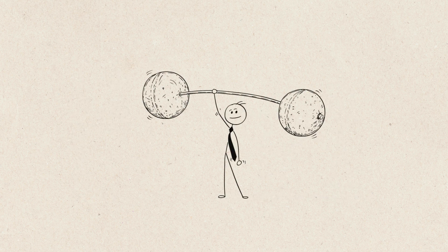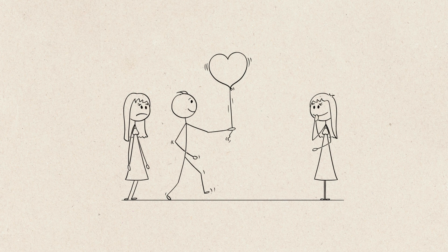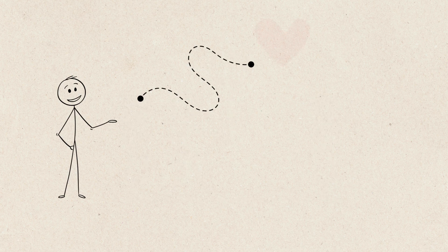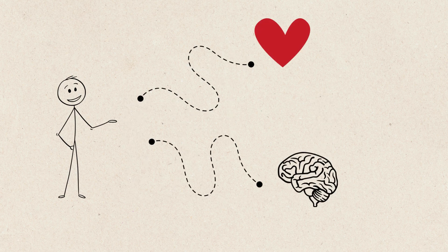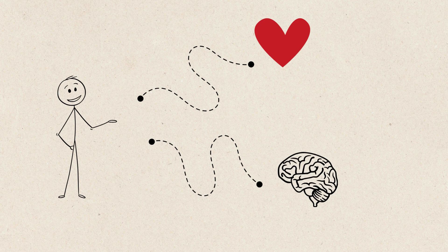Attraction isn't some mystical force, it's pure science. And whether we like it or not, our brains are wired to follow specific patterns when choosing a partner. Understanding this can not only explain why you're drawn to certain people, but also help you make better choices when it comes to love.